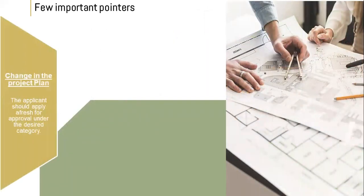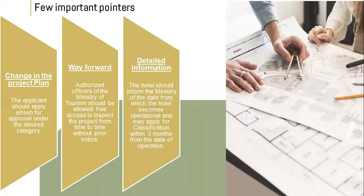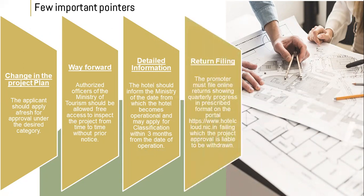A few more important points: for any change in the project plan, the applicant should apply for fresh approval under the desired category. Authorized officers of the Ministry of Tourism should be allowed free access to inspect the project from time to time without prior notice. The hotel should inform the Ministry of the date from which it becomes operational and may apply for classification within three months from the date of operation. The promoter must file online returns showing quarterly progress in the prescribed format on the portal, failing which the project approval is liable to be withdrawn. Remember, return filing is very, very important.